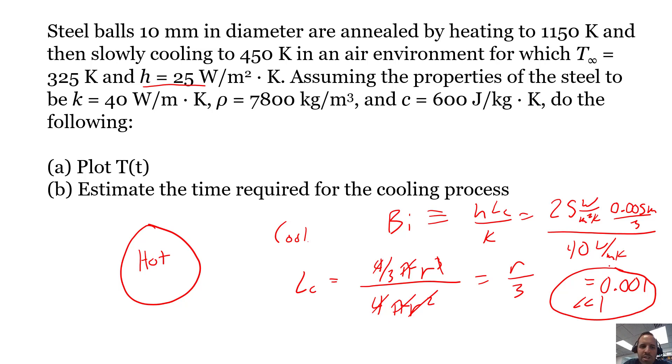This tells us that the lumped capacitance method is a good method to use for this problem because we have this Biot number which is not only less than 1, it's far less than 1. We can treat this sphere as being totally uniform in temperature. We don't have to worry about T as a function of both r and time. We can just consider the temperature to be uniform and just look at temperature as a function of time.